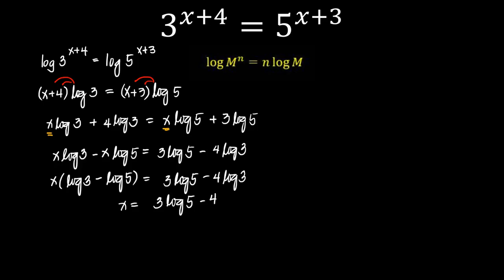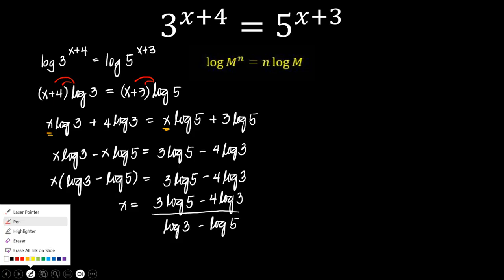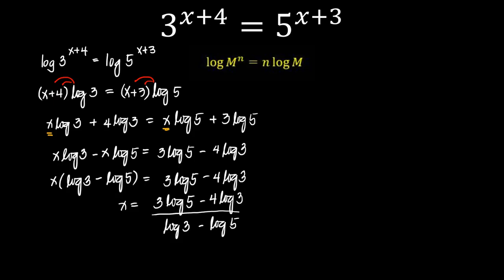So divide everything by log3 minus log5, giving us x equals 3·log5 minus 4·log3, all over log3 minus log5. And this is the answer.